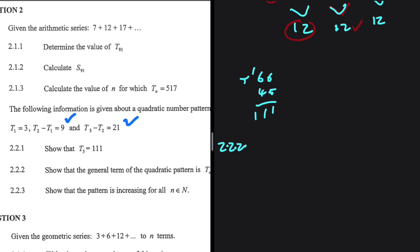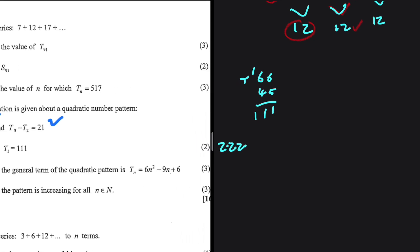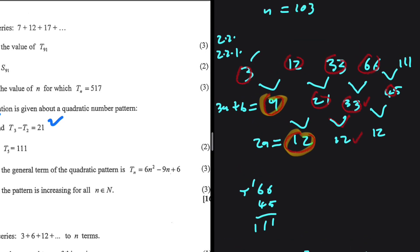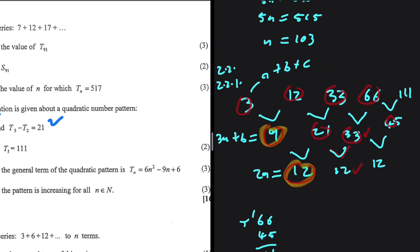Let's move to 2.2.2. Show that the general term of the quadratic pattern is Tn equals 6n squared minus 9n plus 6. Actually, when you're answering 2.2.1, it's very much possible that you find Tn first and then be able to find T5. Let's go ahead and show that Tn equals 6n squared minus 9n plus 6. So 2a equals 12. We know that. And then 3a plus b equals 9. And then a plus b plus c will be equals to 3.